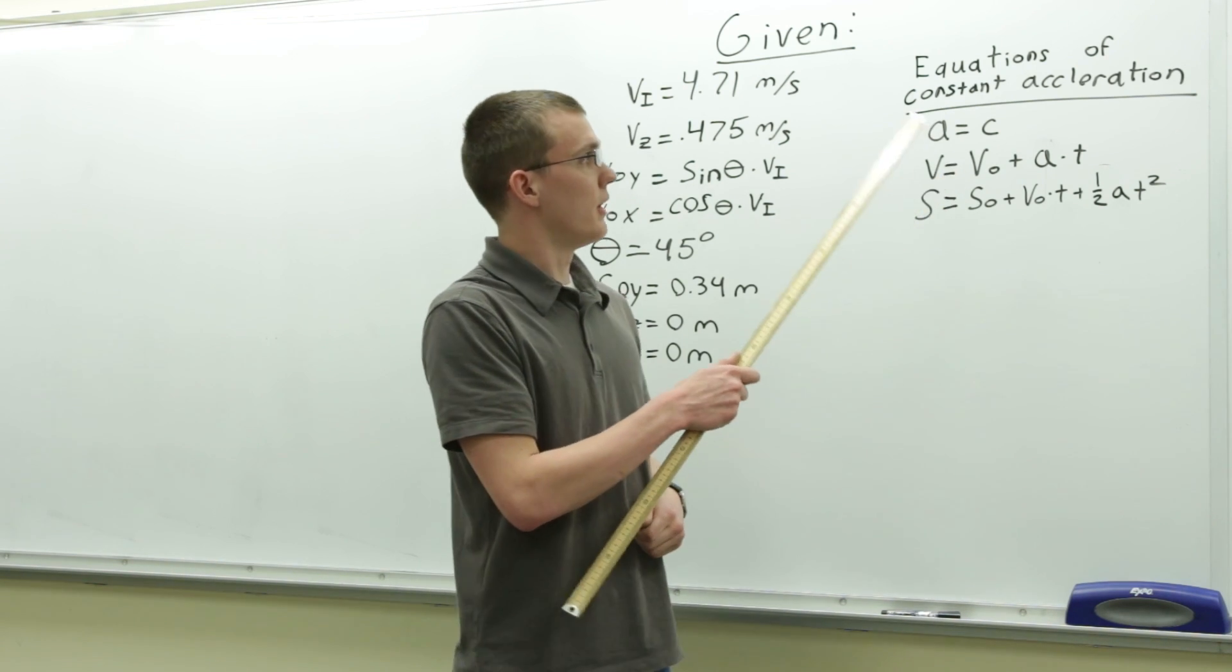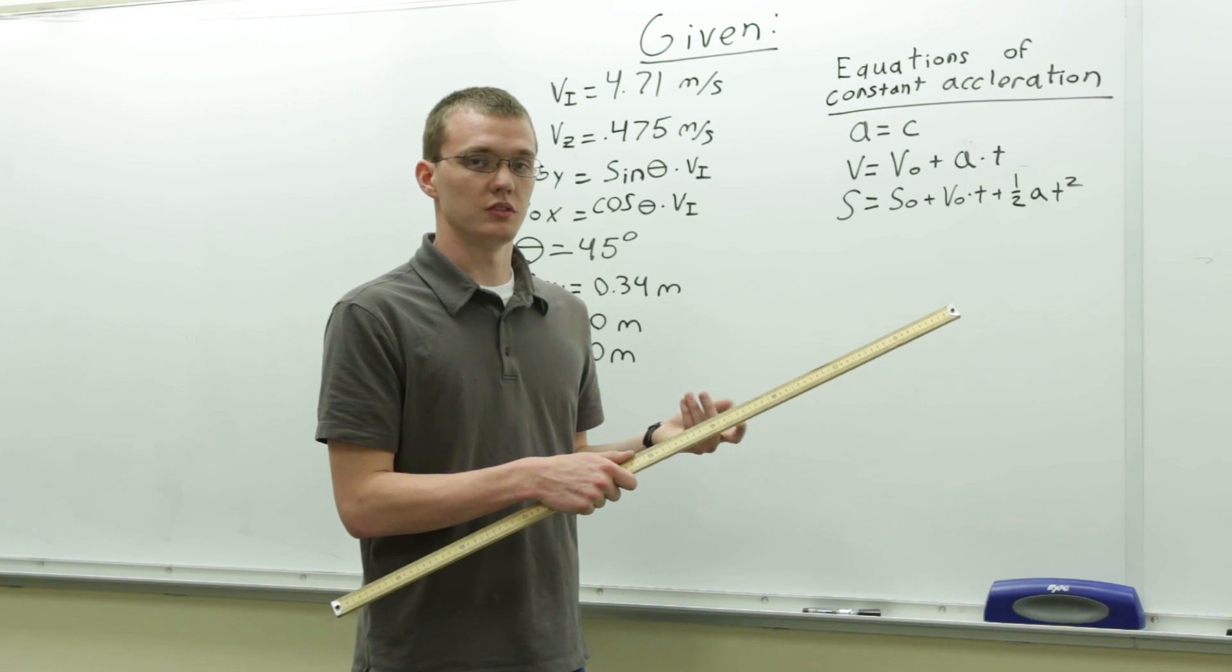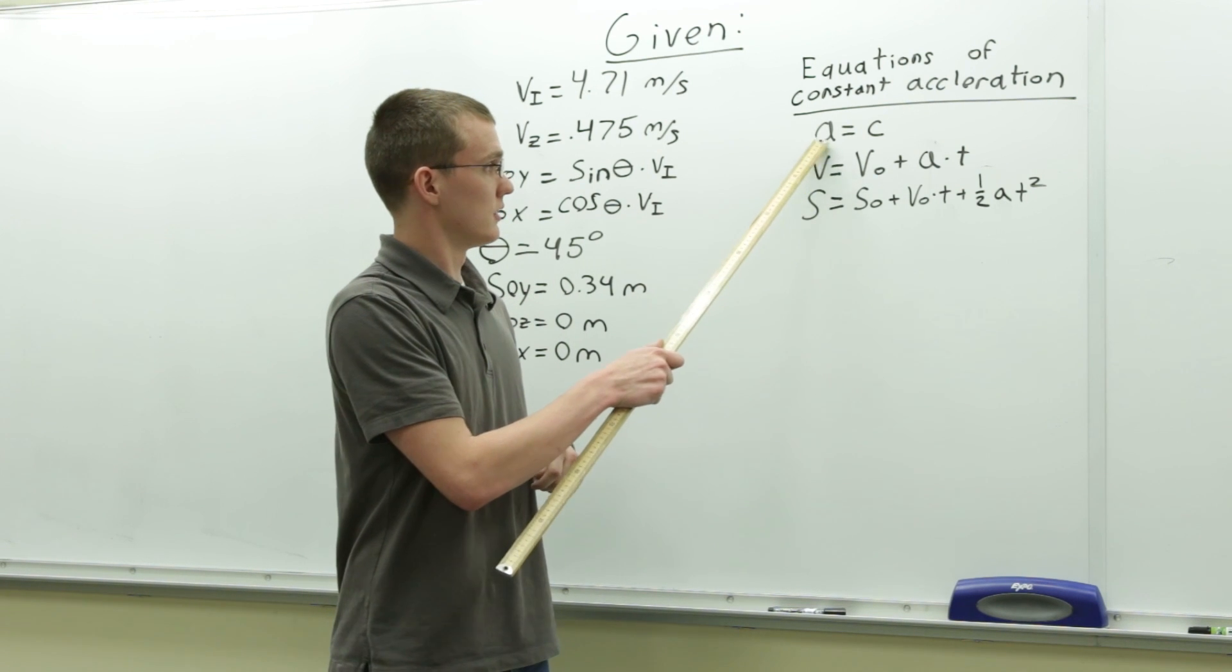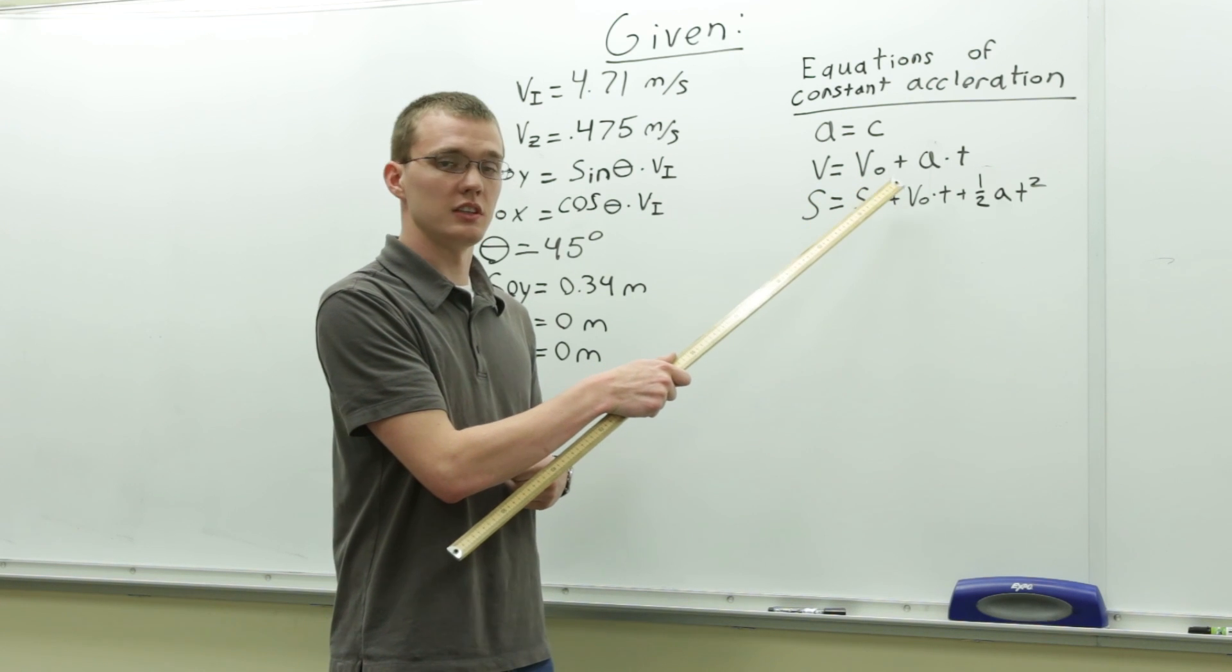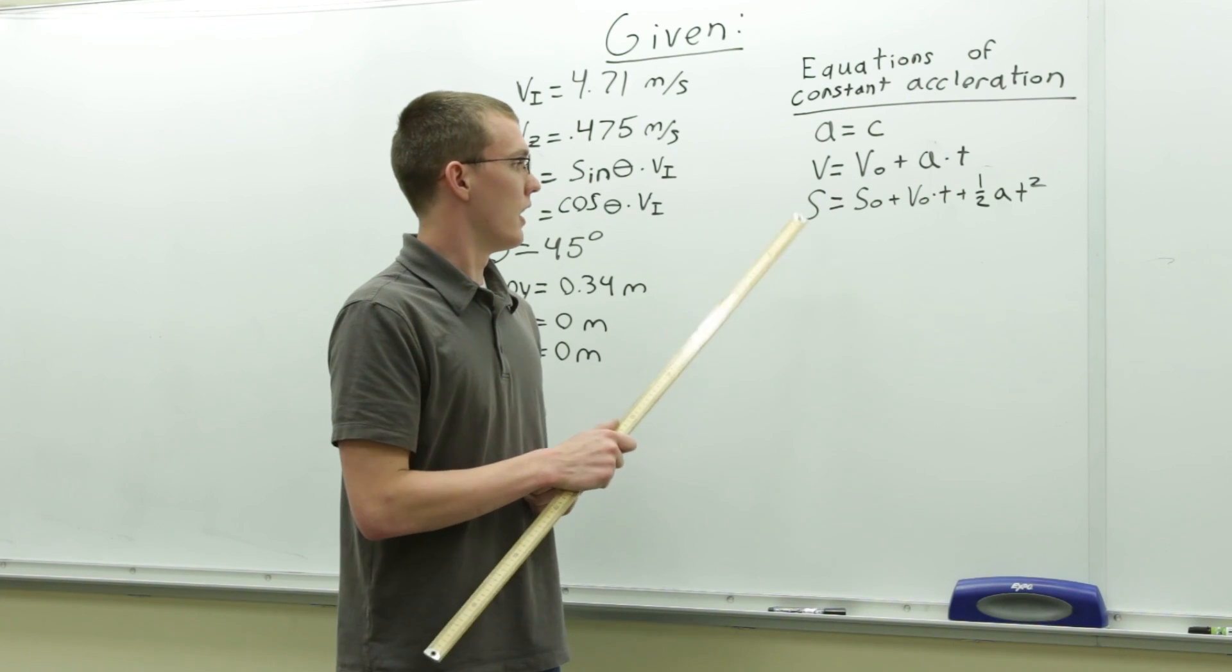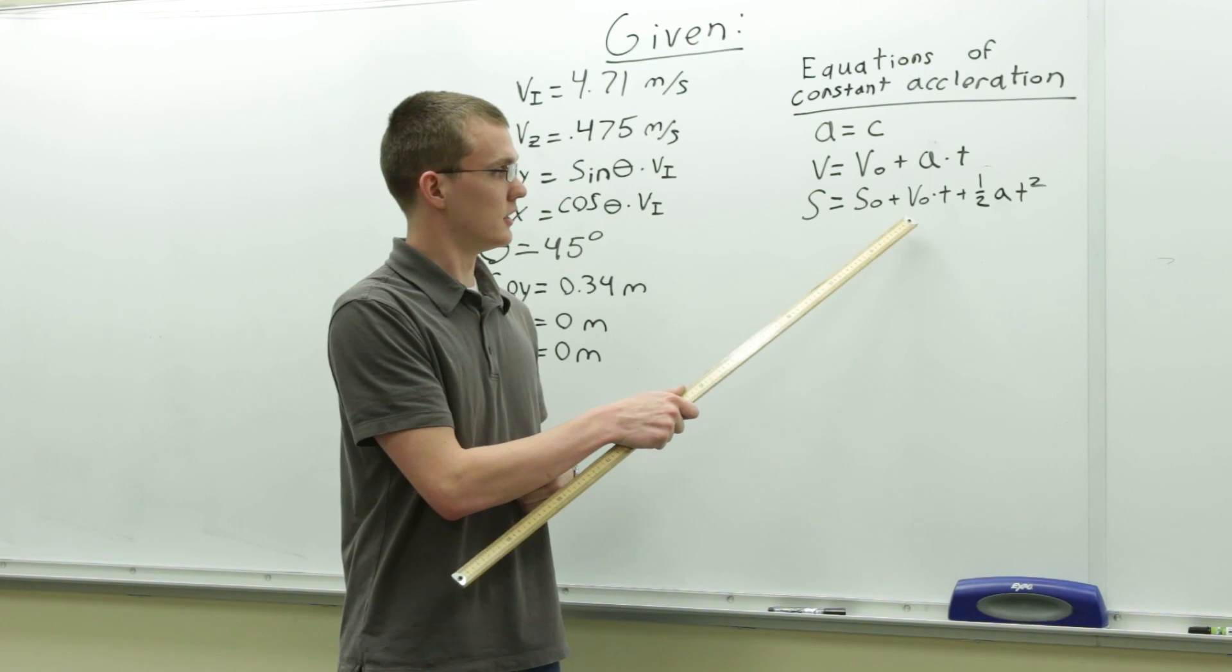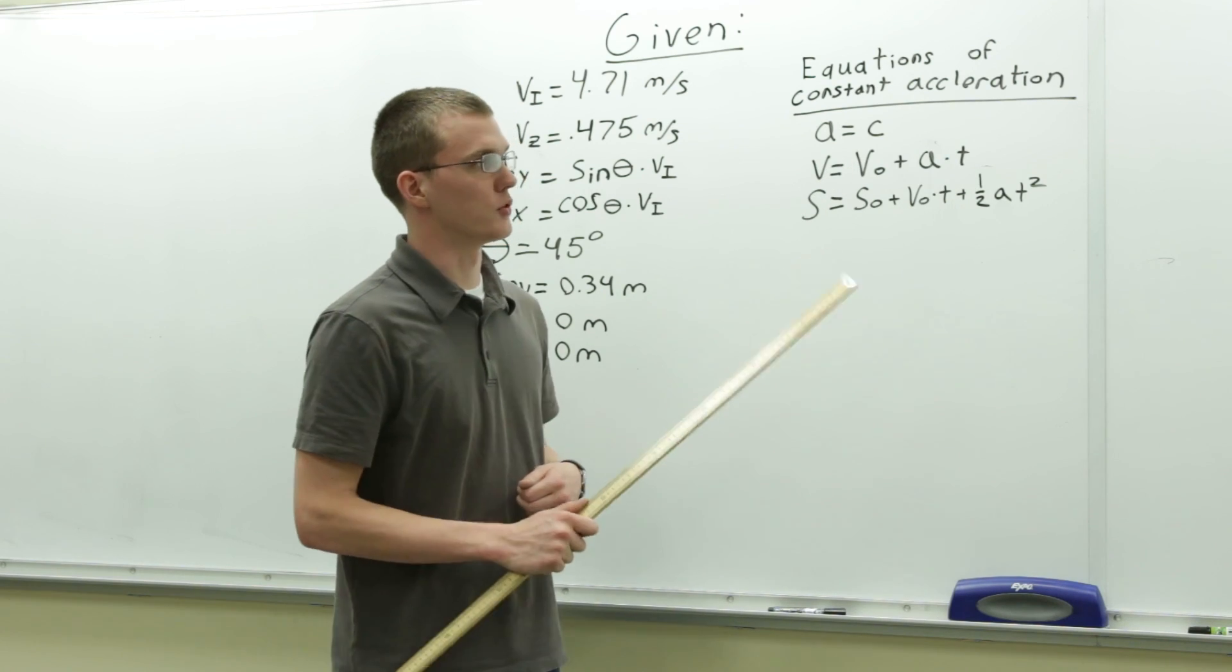Then, over here, we have the equations of constant acceleration. These are the equations that we will use to solve for all the different unknowns. Acceleration is a constant. The velocity at any given time is equal to the initial velocity plus the acceleration times time, and the position at any given time is equal to the initial position plus the initial velocity times the time plus one-half times the acceleration times the time squared.